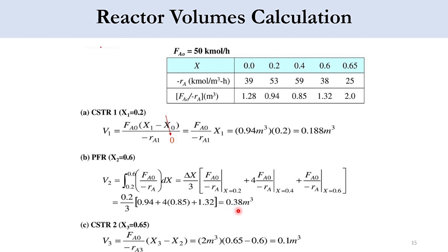Finally solving for the remaining conversion from 60 to 65 percent: x3 will be 0.65, x2 will be 0.6. FA0 over minus RA3 at 65 percent conversion is 2.0. x3 minus x2, 0.65 minus 0.6, will be 0.1 cubic meter. So this is the overall procedure to solve reactors in series.